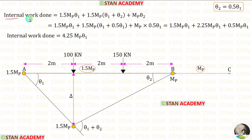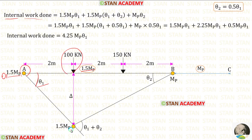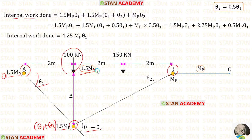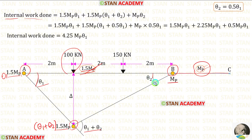Now let us find the internal work done. At point A, we have a plastic hinge — we multiply 1.5 Mb with angle theta 1. Under the point load 100 kN, we have a plastic hinge — we multiply 1.5 Mb with the angle theta 1 plus theta 2. At joint B, we have a plastic hinge. We must be careful: on the left side we have 1.5 Mb and on the right side in span BC we have Mb. We always select the smaller value, so we select Mb.